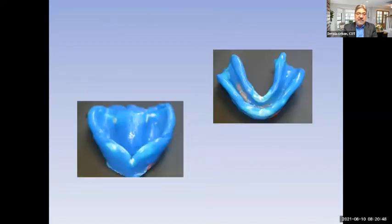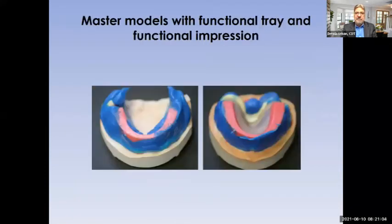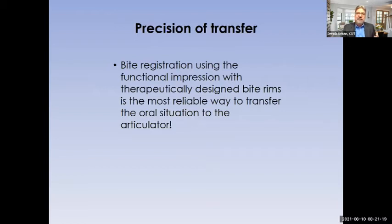This is the final impression from a doctor who liked large, full borders — heavily border molded in the periphery areas. The doctor also took an occlusal registration and we poured the models. A functional impression with therapeutically designed bite rims is one of the most reliable ways to transfer the oral situation to the articulator. We want to feel like we have that patient at the bench with us, because all we really have is an articulator — the more information we get, the better.